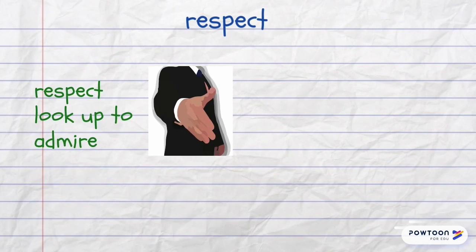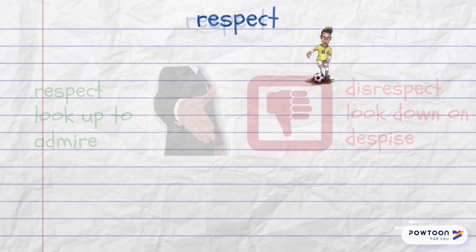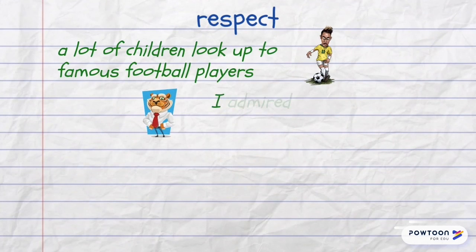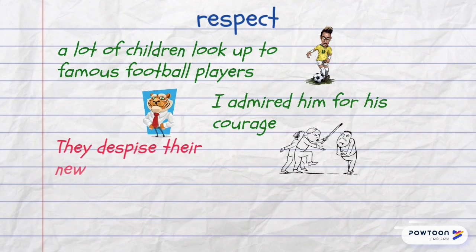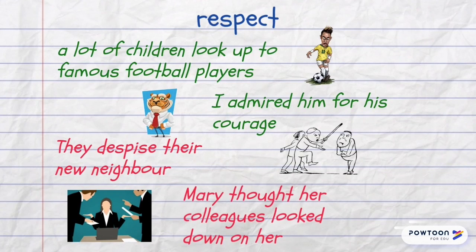When you respect someone, you can also say that you look up to someone or admire someone. The opposites are disrespect, look down on someone, or despise someone. For example: A lot of children look up to famous football players. I admired him for his courage. They despise their new neighbor. Mary thought her colleagues looked down on her.